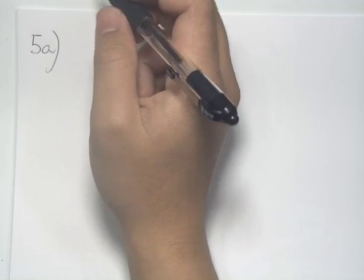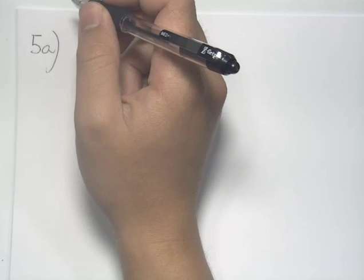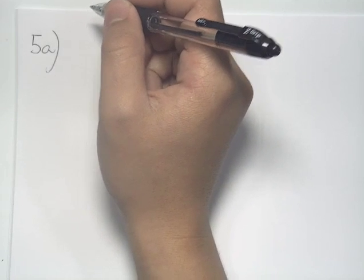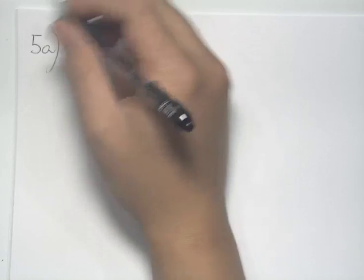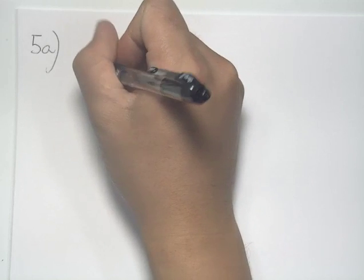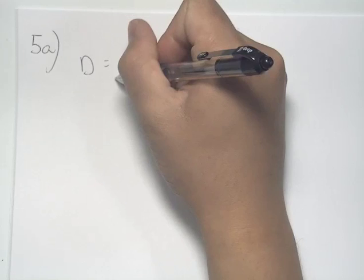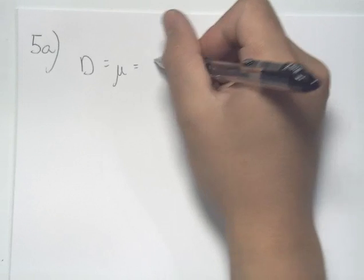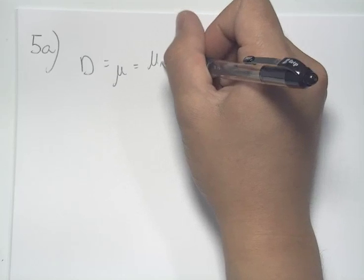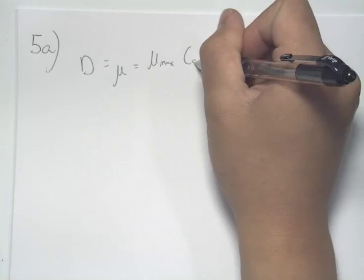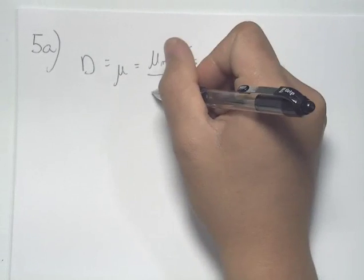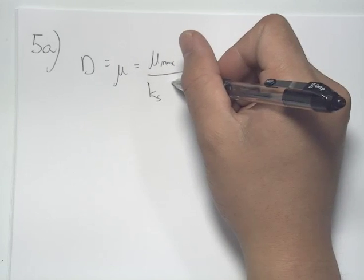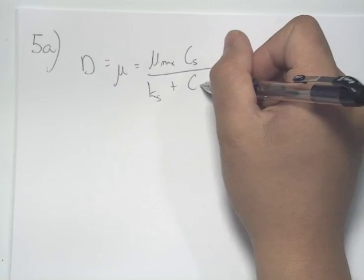Part A asks us to find the dilution rate for an existing cell concentration of 9.5 grams per decimetre cubed. The dilution rate can be calculated and it equals the specific growth rate of the cells, where mu equals mu max times the substrate concentration over the Monod constant plus the substrate concentration.